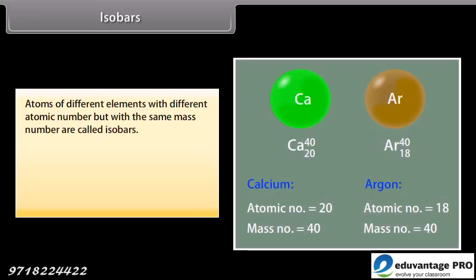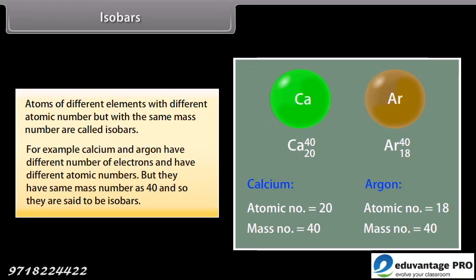Isobars. Atoms of different elements with different atomic number but with the same mass number are called isobars. For example, Calcium and argon have different number of electrons and have different atomic numbers, but they have same mass number as 40 and so they are said to be isobars.